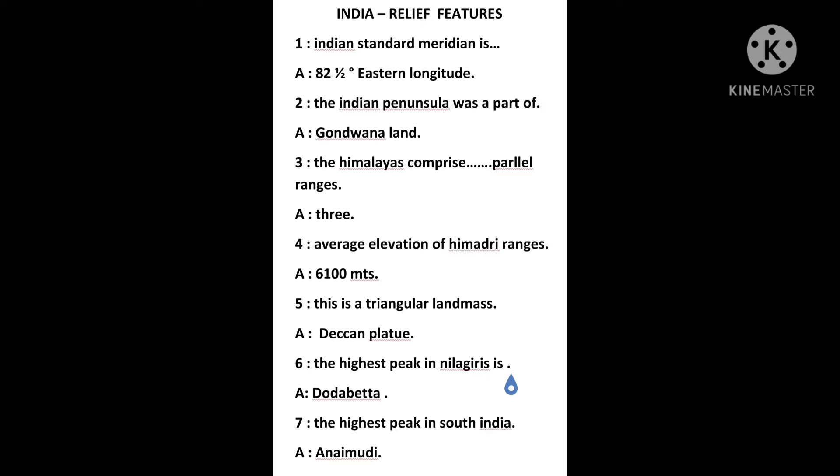India's Standard Meridian is the 82nd Eastern Longitude. The Indian Peninsula was a part of Gondwana Land. The Himalayas comprise 3 parallel ranges. The average elevation of the Himadri range is 6100 meters.